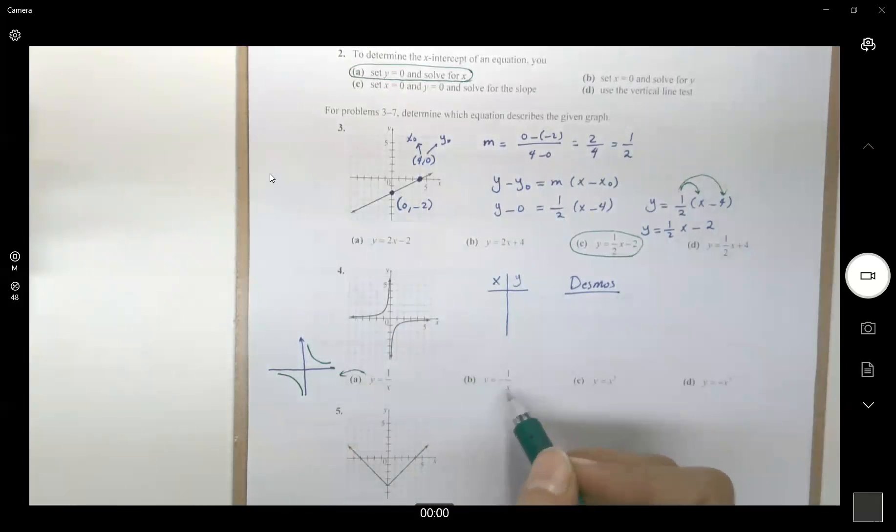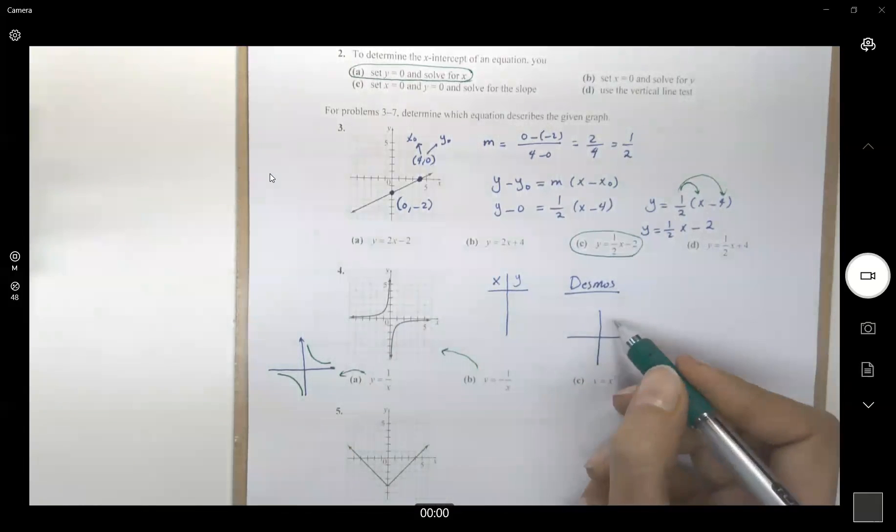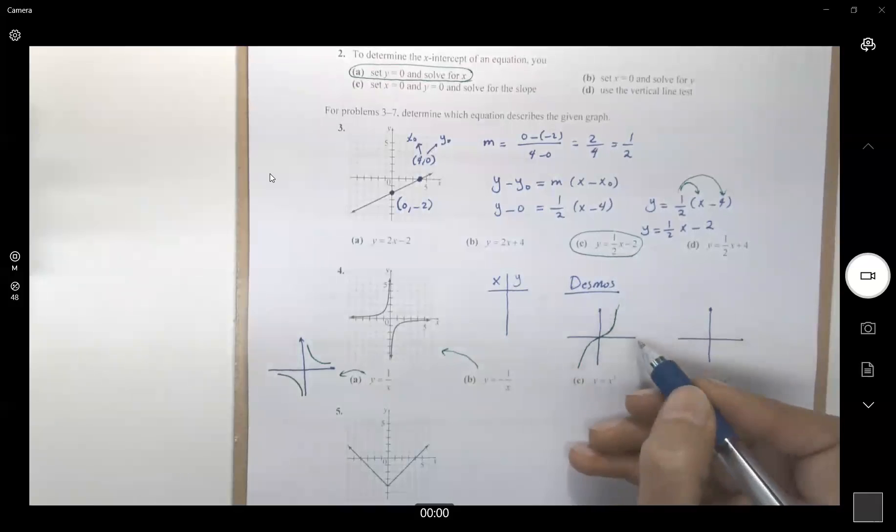y equals to negative 1 over x has the following graph. y equals to x cubed has the following graph. It behaves like this. y equals to negative x cubed, this graph behaves as this.